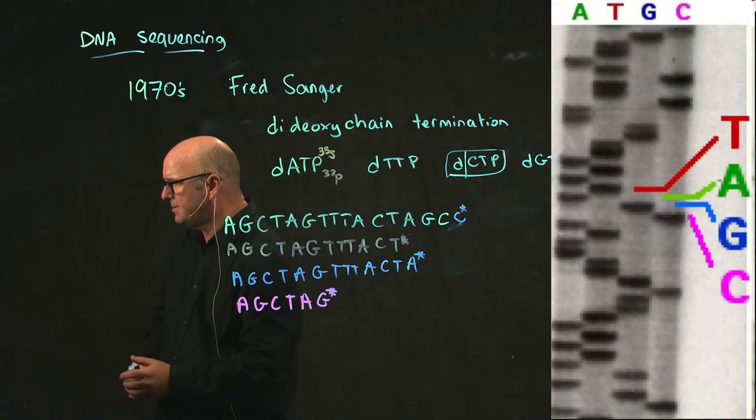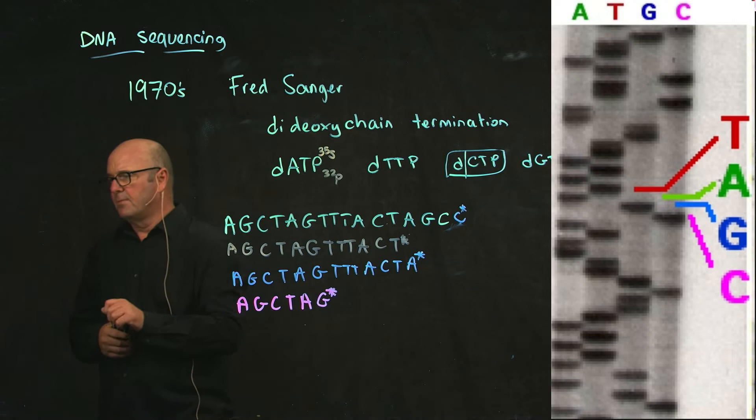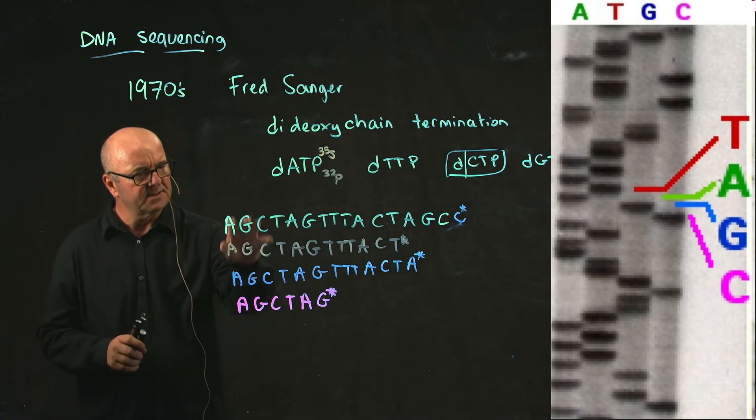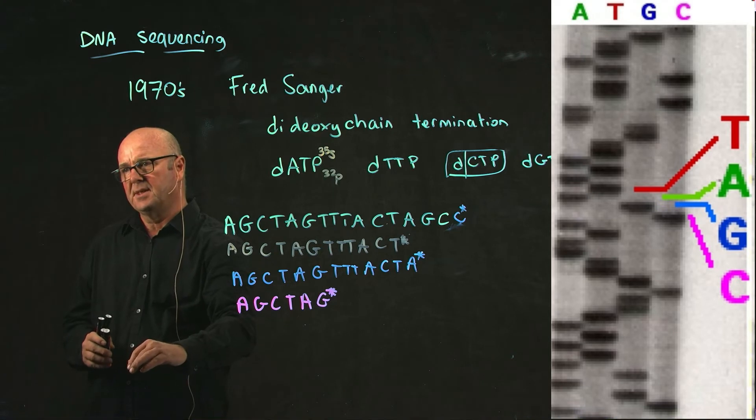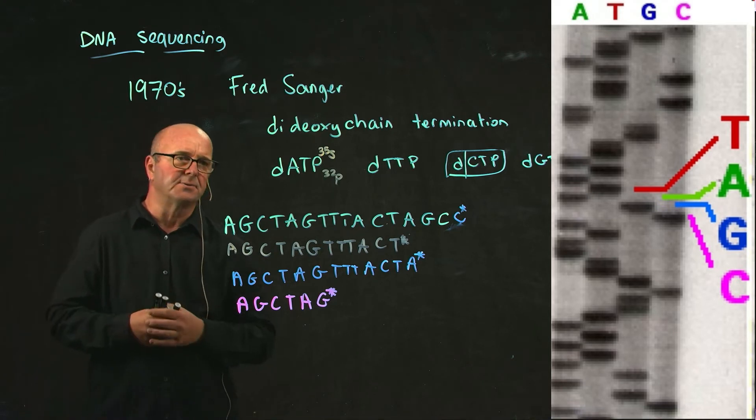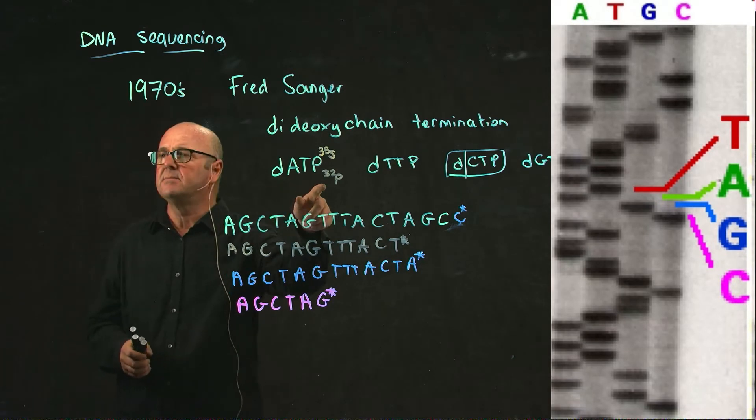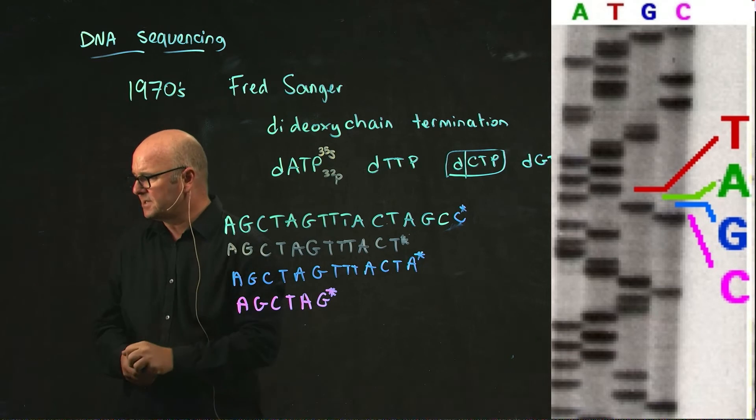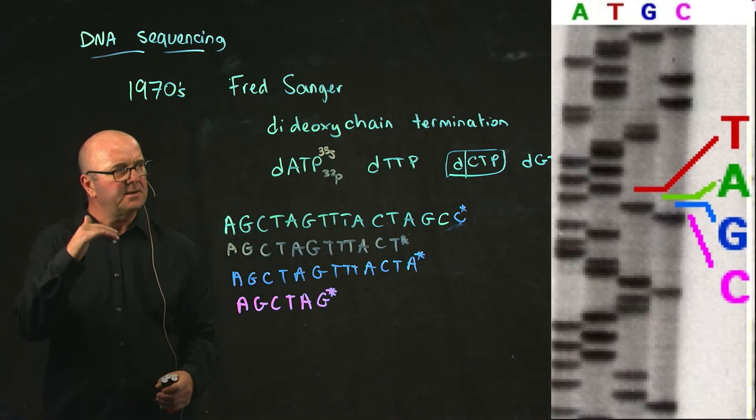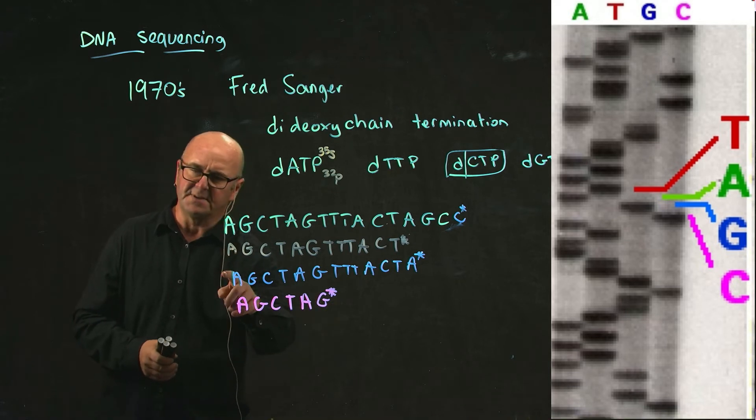And that's what's shown in this figure here on the right. So basically we take this set of DNA, we separate it out on a long gel, and we put that gel next to a piece of photographic film, and where we get a black band is where we have our radioactive phosphorus. And so each ladder in that band corresponds to one of these different DNA molecules.